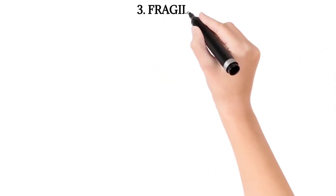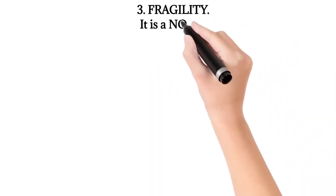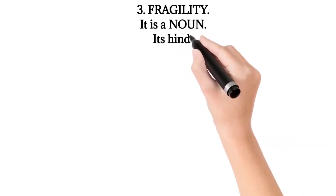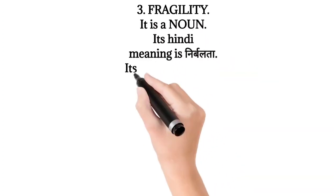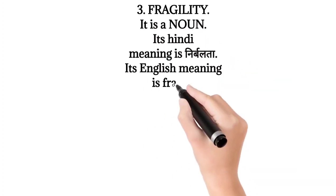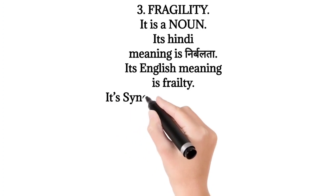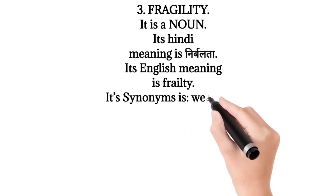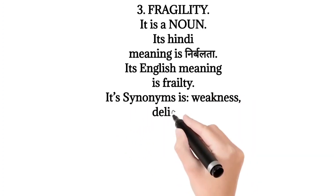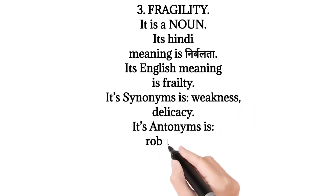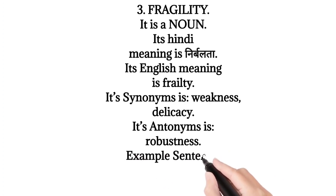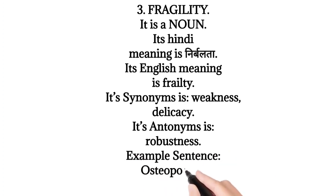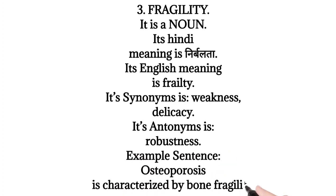3. Fragility. It is a noun. Its Hindi meaning is Nirbalta. Its English meaning is Frailty. Its synonyms are Weakness, Delicacy. Its antonym is Robustness. Example sentence: Osteoporosis is characterized by bone fragility.